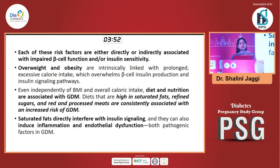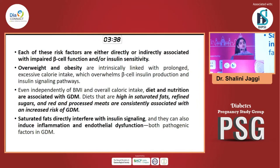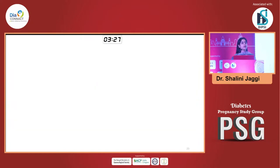Each of these risk factors — if the mother is already overweight, obese, consuming a diet high in saturated fat, refined sugars, red and processed meats — they are consistently associated with an increased risk of GDM. They directly interfere with insulin secretion which launches your nutrients. Studies show that saturated fat consumption interferes with insulin signaling, inducing inflammation and endothelial dysfunction. That is why it is important for the woman to maintain a healthy weight and follow a healthy diet.